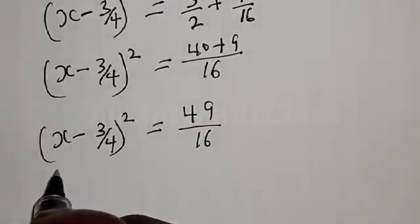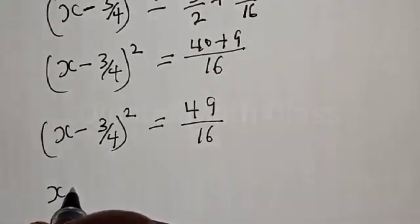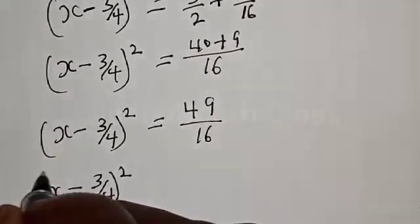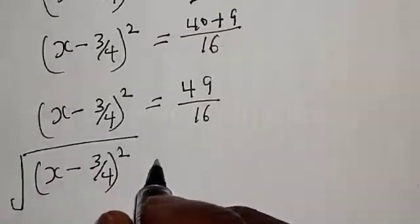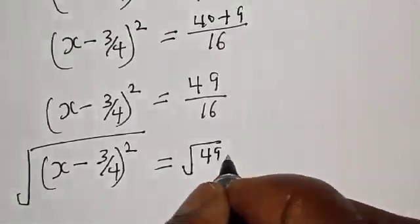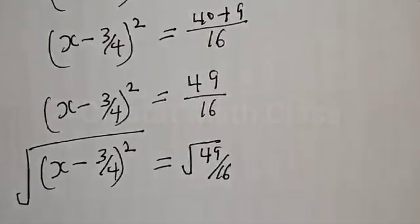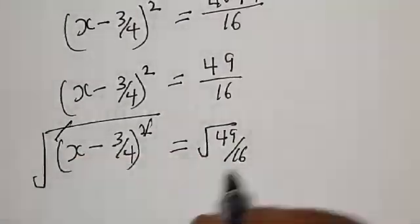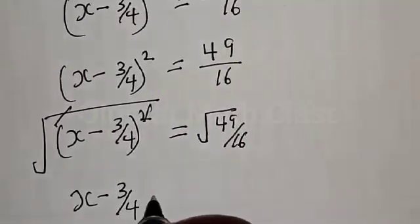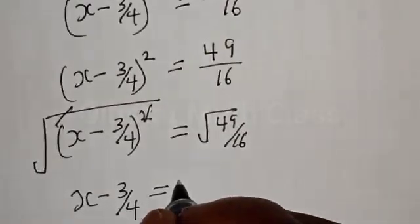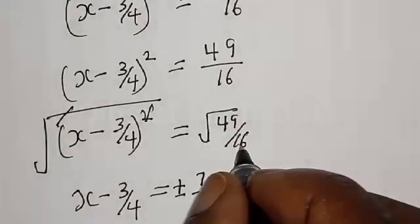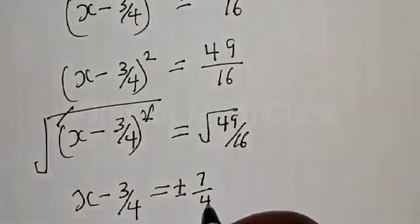Taking the square root of both sides: √(s - 3/4)² = √(49/16). This gives s - 3/4 = ±√49 / √16, and since √49 = 7 and √16 = 4, we have s - 3/4 = ±7/4.